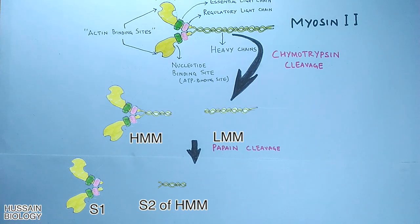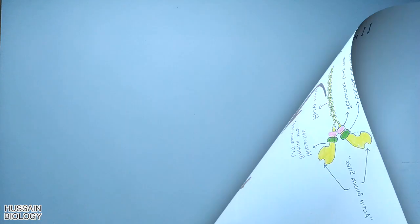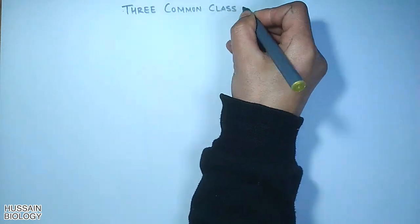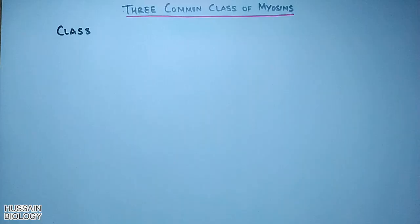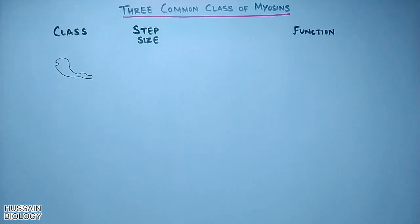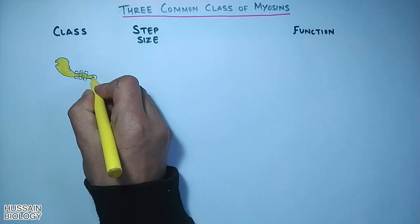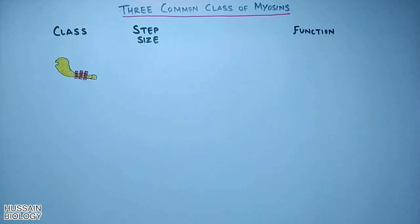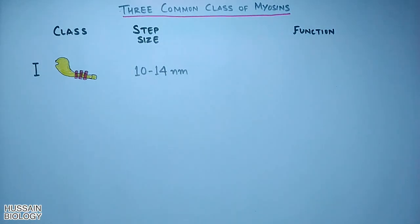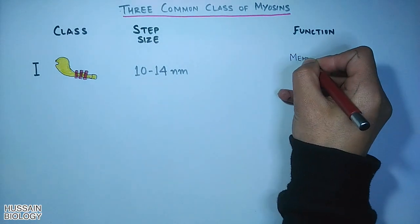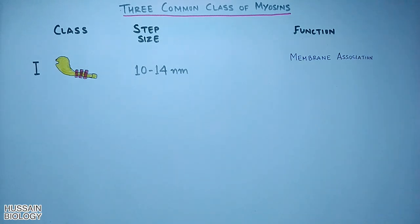Now let's see the three common classes of myosin proteins. First we have the class 1 myosins. Members of the myosin 1 class are the only myosins to have a single head domain. They have a step size of 10 to 14 nanometers, with functions like membrane association and endocytosis.